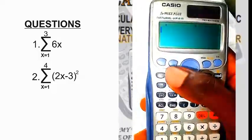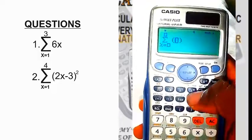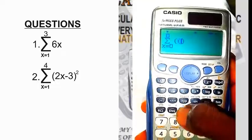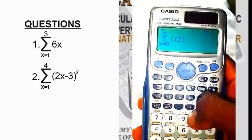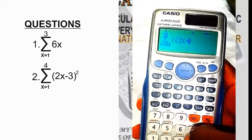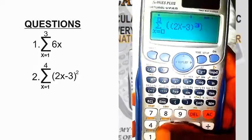Now, let's go to the second question. I do the same thing. Open brackets, 2x minus 3, close the brackets.